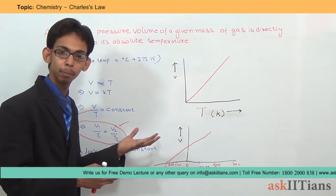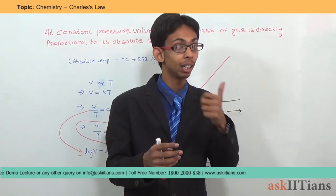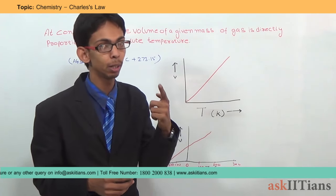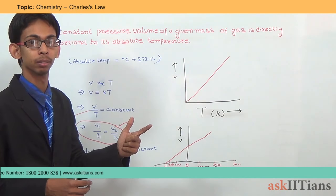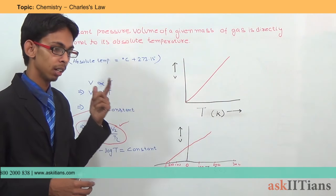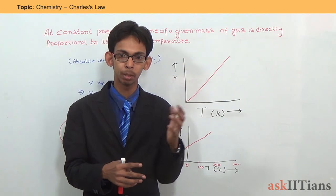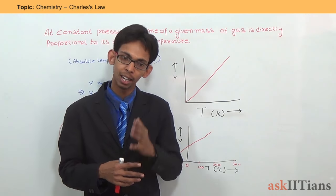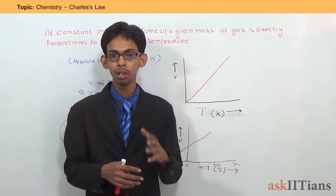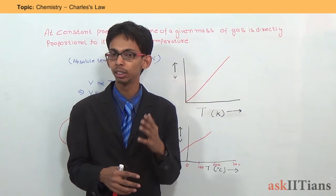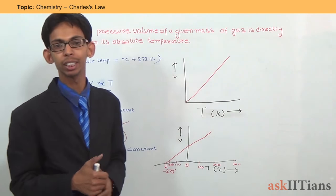This is Charles's Law, according to which volume is directly proportional to absolute temperature. Whenever we increase the temperature, gases expand — their volume increases — at constant pressure, for a fixed amount of gas, meaning the number of moles is constant. At a fixed pressure, its volume will be directly proportional to the absolute temperature.